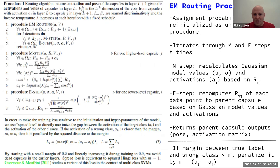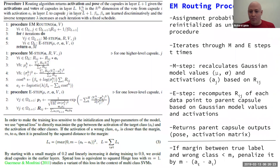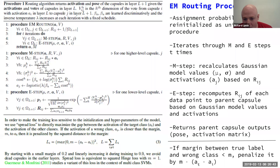The EM routing procedure: first we assign the RIJs (assignment probabilities) as uniform. Then we iterate through M and E steps T times. In the M step, we recalculate the Gaussian model values and activations based on the assignment probabilities. In the E step, we recompute the assignment probabilities based on the Gaussian model values. What we return are the parent capsule outputs, and we iteratively go through that until we're happy with the outputs, then proceed to the next layer.